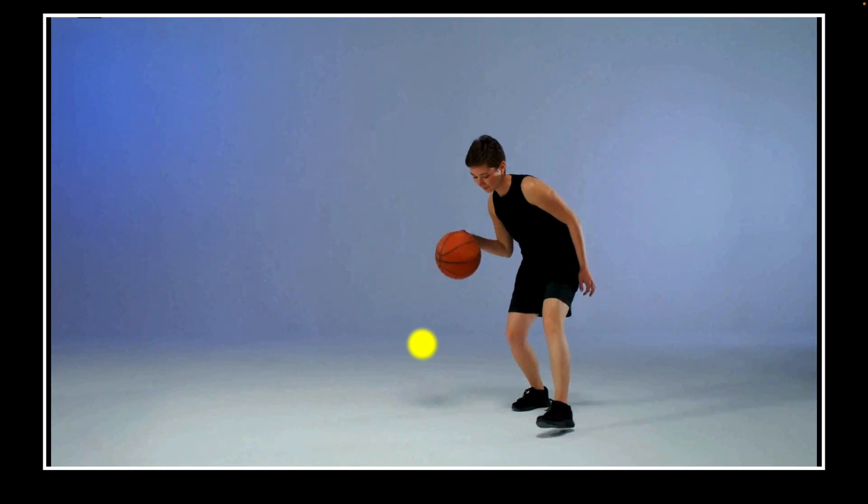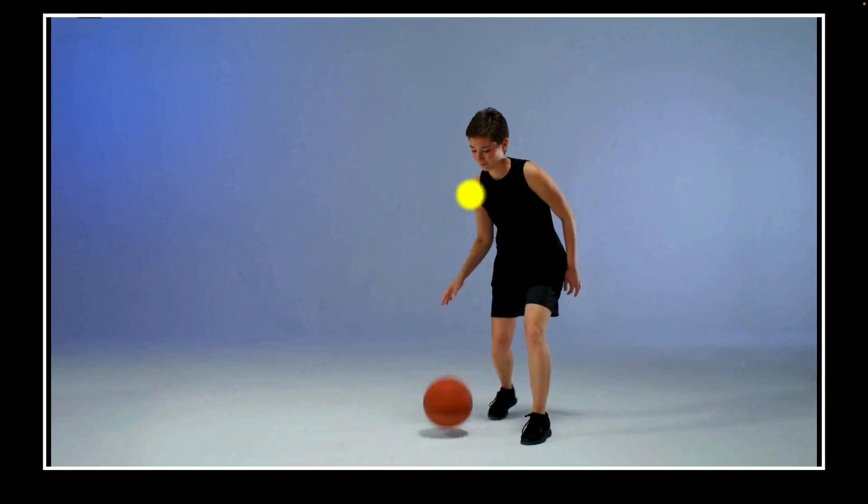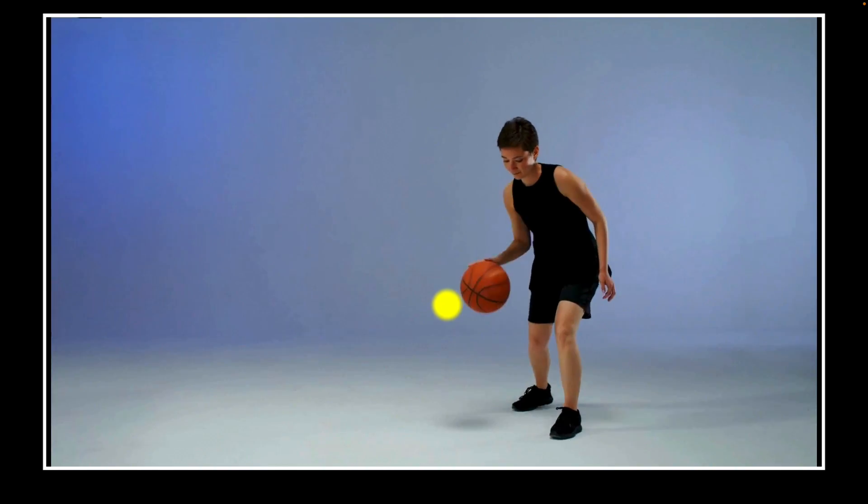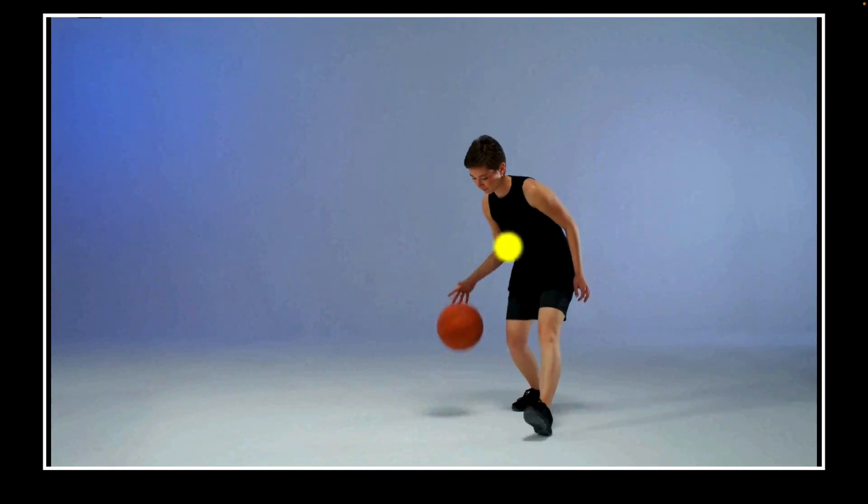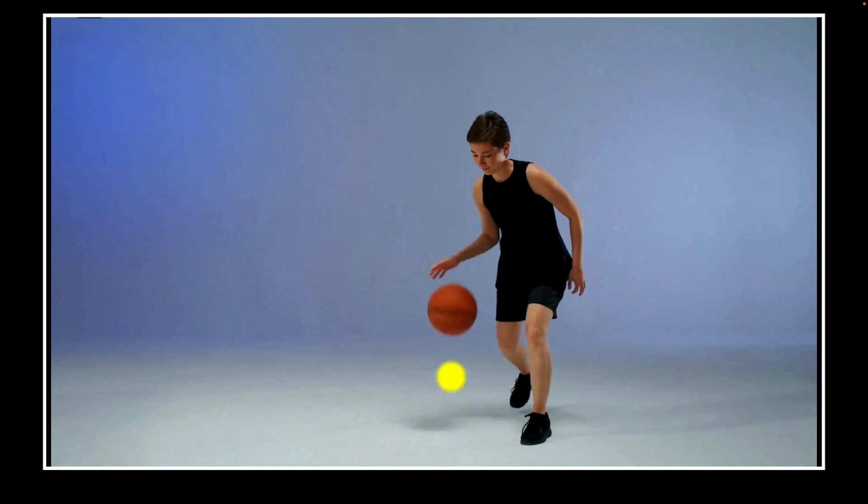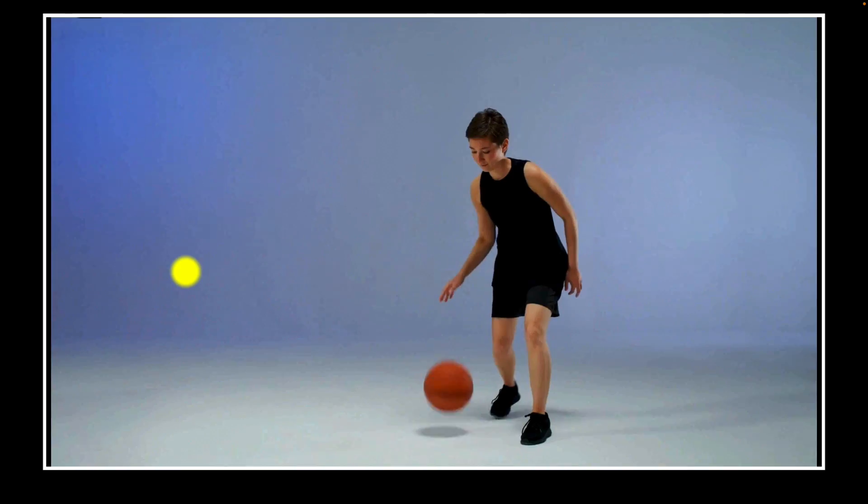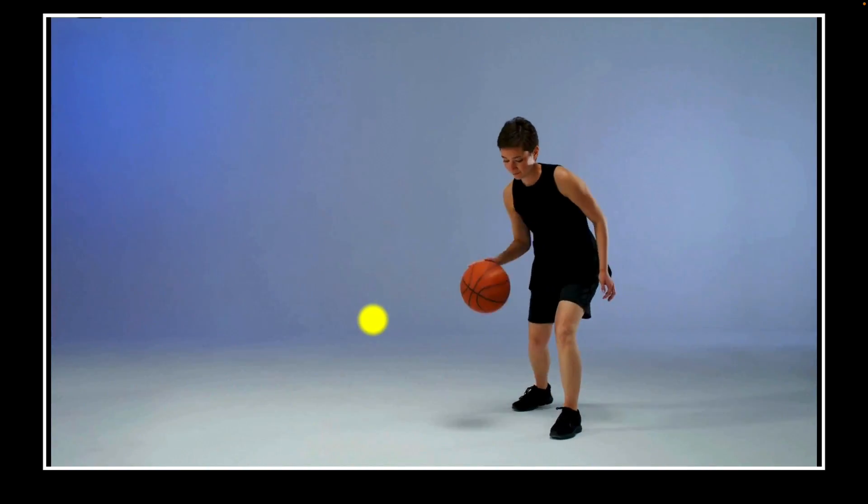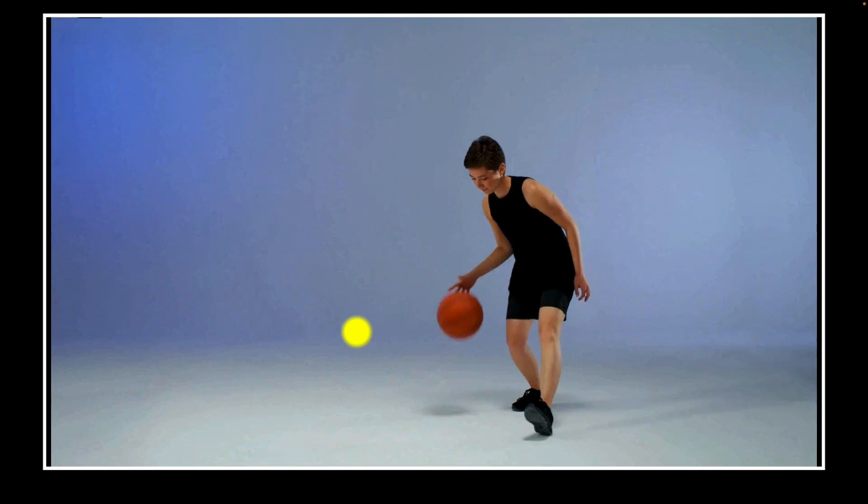That energy lets the ball bounce back to the same height again. And what's amazing is that while the ball earth system keeps losing energy to its surrounding, you are constantly pumping energy back into it. So over time, your body's energy gets transferred into the earth ball system, which then gets transferred into the surrounding through sound, heat and motion. That's how energy flows. It's always there. It's always conserved, but it changes form and moves around.